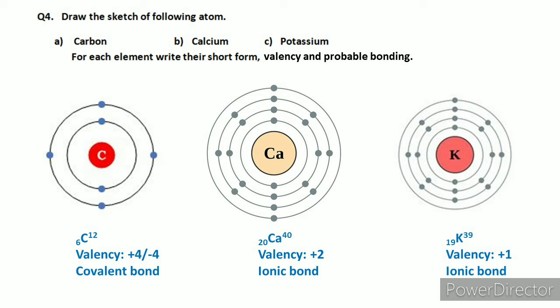Similarly, let's draw potassium. Potassium's atomic number is 19, which means it has 19 electrons to fill. After filling the shells properly, you can see that potassium has one electron in its outermost shell. It will give away that one electron to form an ionic bond.